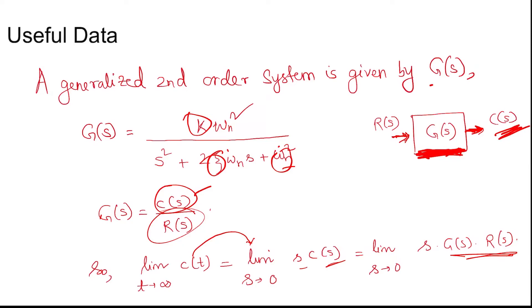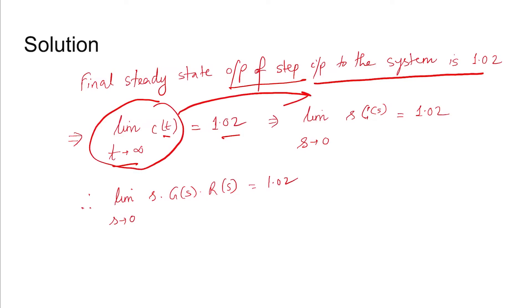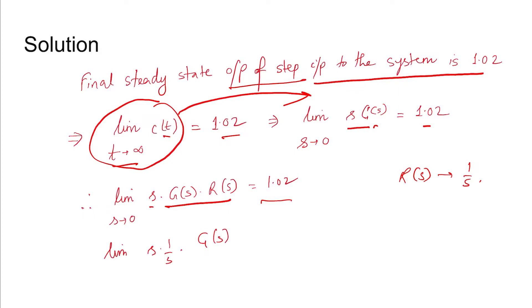For a unit step input, the steady state output is 1.02, so the limit as t→∞ of c(t) is 1.02. In the Laplace domain this becomes limit s→0 of s·C(s) = 1.02. Since C(s) = G(s)·R(s) and for a unit step R(s) = 1/s, we get s · (1/s) · G(s) evaluated at s→0, which simplifies to G(0) = 1.02. This means the DC gain of the system is 1.02.